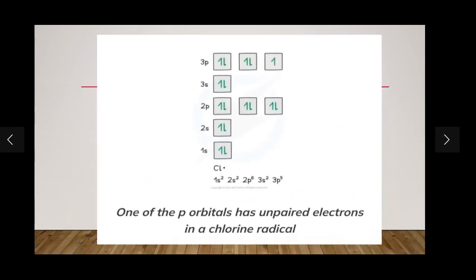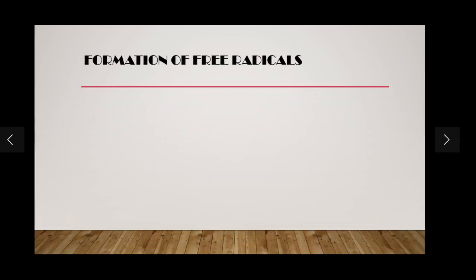Here is chlorine's electronic configuration shown in box diagrams. You can see 1s, 2s, 2p, and 3s are all paired. When it comes to 3p, the 3px and 3py orbitals are paired, but 3pz is unpaired. That makes it a free radical, and this is how you write Cl· — the dot represents the free radical.